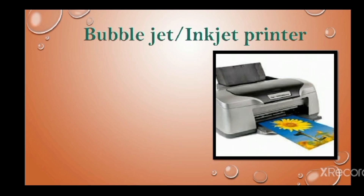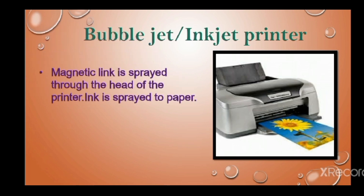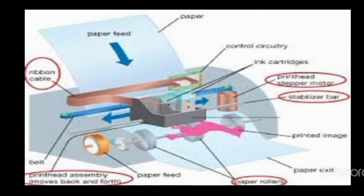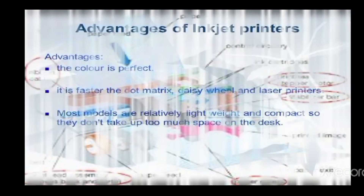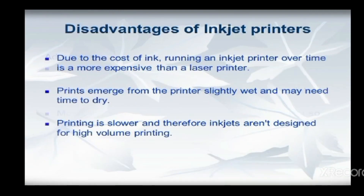This is the inkjet printer, also called a bubble jet printer. Ink is spread through the head of the printer. These are the parts of the inkjet printer, along with the advantages and disadvantages of inkjet printers.